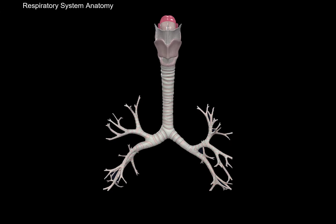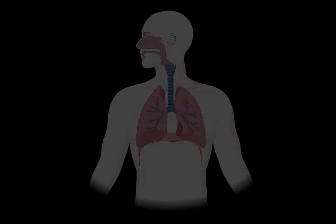What's up? Meditator here. Let's talk about the anatomy of the respiratory system. In this segment, we will be talking about the anatomy of the Trachea and the Bronchi.